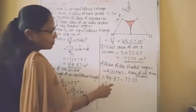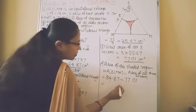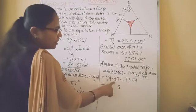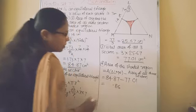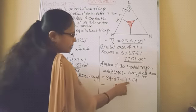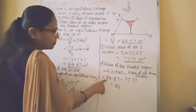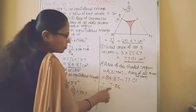Now subtract this. 7 minus 1, 6. 8 minus 0, 8 decimal point. 14 minus 7, 7. And 7 minus 7, 0.